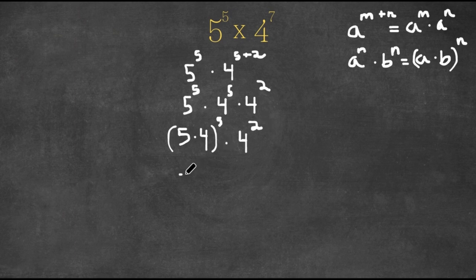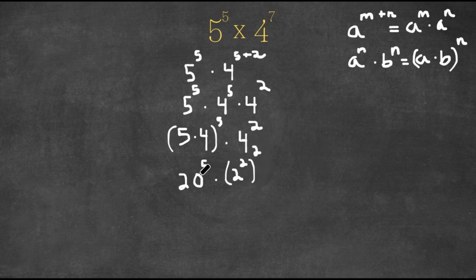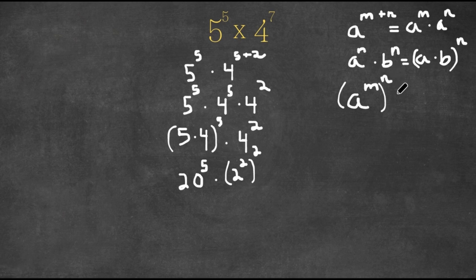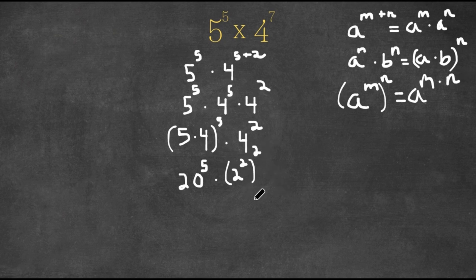Now 5 times 4 is 20, so now we have 20 to the power of 5 times 4 squared. Well 4 is the same thing as 2 to the power of 2, so we have 2 to the power of 2 to the power of 2. Now this is another exponential property: if we have a to the power of m to the power of n, this is equal to a to the power of m times n. So 2 to the power of 2 to the power of 2 is the same thing as 2 to the power of 4.